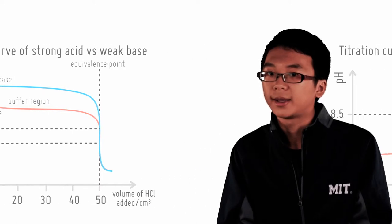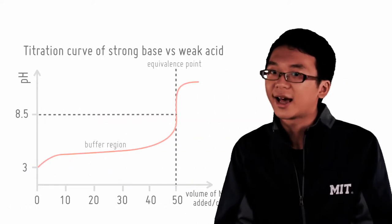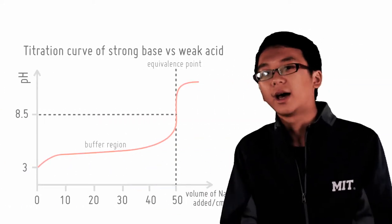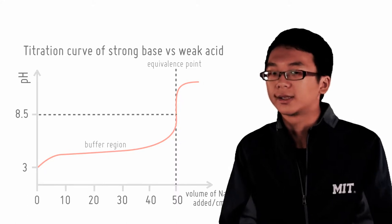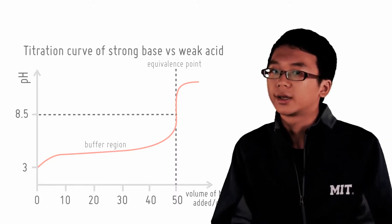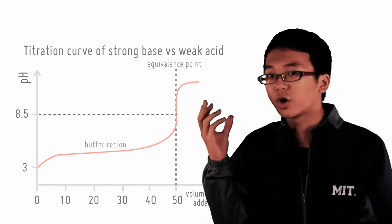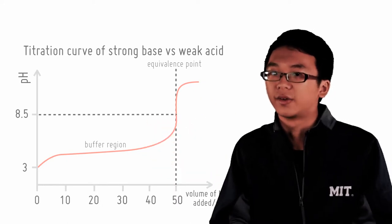Next, let's look at a strong base on a weak acid. The weak acid is now in the conical flask. At the start, pH is low because it is an acid. It is very similar to the other case. As we add more base, the pH gradually increases until it reaches the equivalence point.